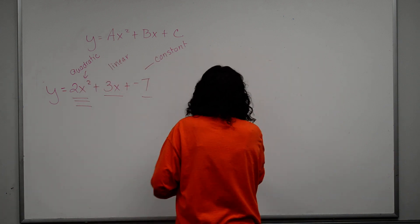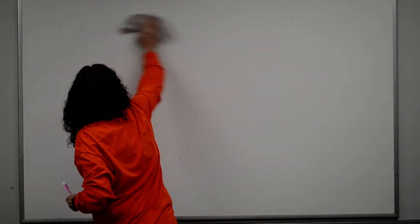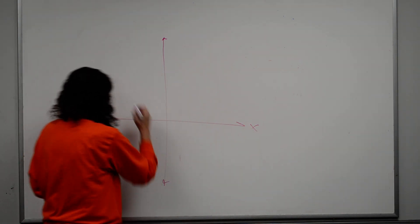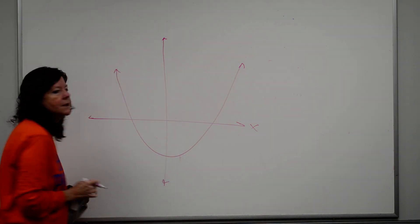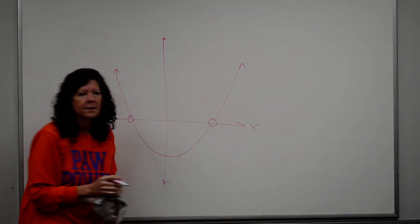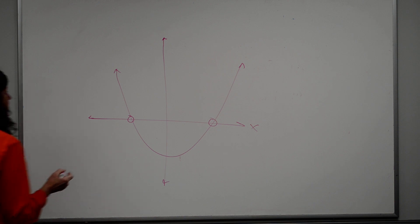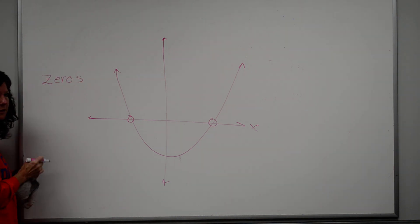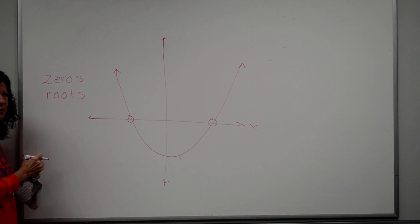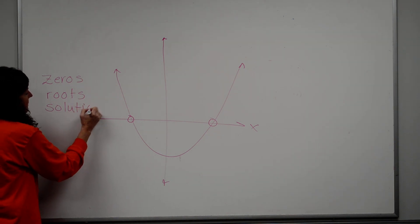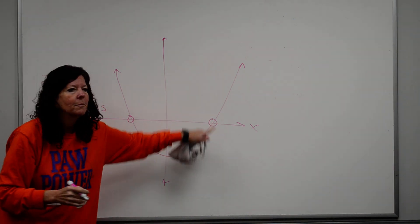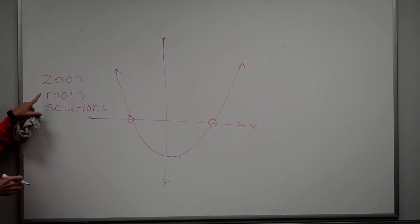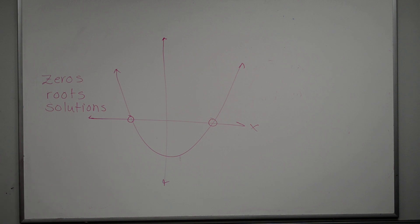When you have a parabola, you could have parabolas that cross the x-axis. Where it crosses the x-axis has a term to it — actually three terms that all mean the same thing: the zeros of the equation, the roots of the equation, or the solutions of the equation. That's all the term for where it crosses the x-axis. Technically, the zeros are specifically where it crosses the x-axis; roots and solutions can involve imaginary numbers.